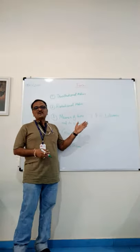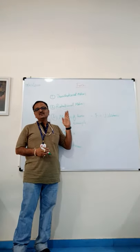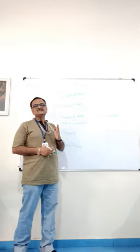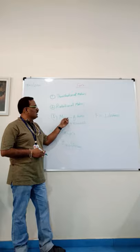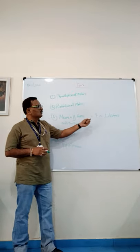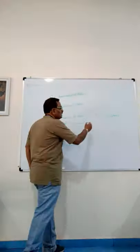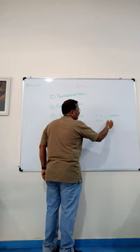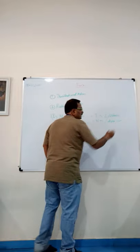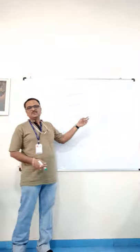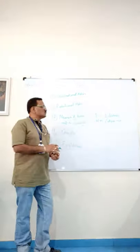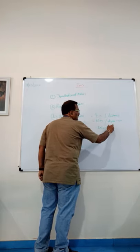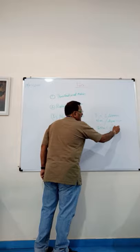You cannot apply force anywhere — it should be from the axis of rotation to the shortest distance, and the shortest distance is the perpendicular distance. Therefore, moment of force equals force into perpendicular distance. Since force is measured in Newtons and distance is in meters, the unit is Newton meter or dyne centimeter. In the 2020 paper this topic came in section A. The conversion is: 1 Newton meter equals 10 to the power 7 dyne centimeter.